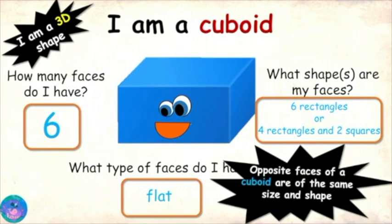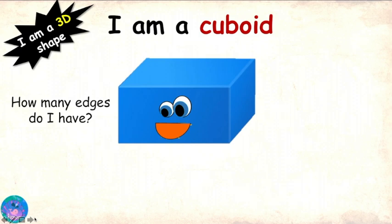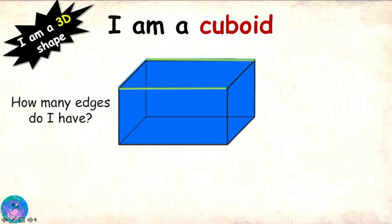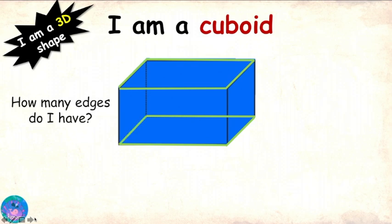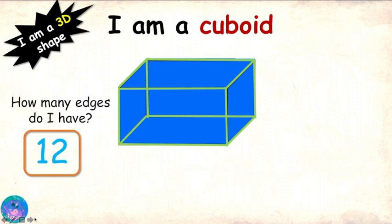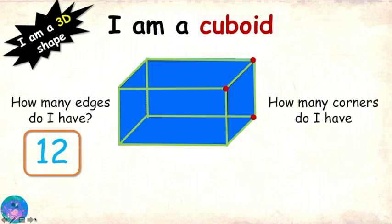Got it! Now tell me, how many edges do I have? Let me count: 1, 2, 3, 4, 5, 6, 7, 8, 9, 10, 11, 12. 12 edges. Correct. And how many corners do I have? 1, 2, 3, 4, 5, 6, 7, 8.